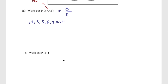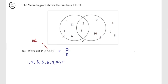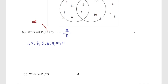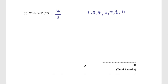Part B: work out the probability of B complement. Remember B complement is all the numbers outside of B. Let's list them: 1, 3, 4, 6, 7, 8, 11. So the probability of B complement is 7 out of 11. That question was out of four marks.